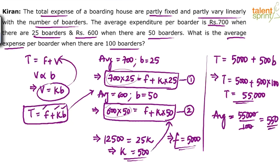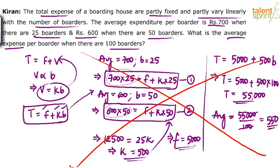This can actually be done faster. The process is correct — you can cut down many steps and get the answer in about 40–45 seconds. You don't have to write T = F + V, V proportional to B, V = kB and all that. You can directly write the equation, frame the two equations, and solve to get the values of F and K. However, there is a better, smarter way to get the answer.